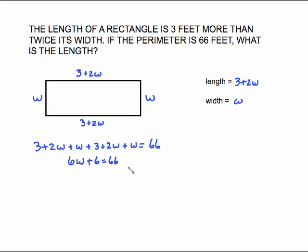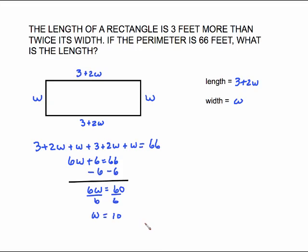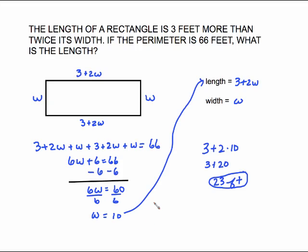This is a simple two-step equation. Subtract 6 from both sides: 6W equals 60. Divide both sides by 6: W equals 10. But we were asked for the length, so plug 10 back in: 3 plus 2 times 10. Order of operations says multiply first — that's 20 — then 3 plus 20 is 23 feet. That is the answer for the length.